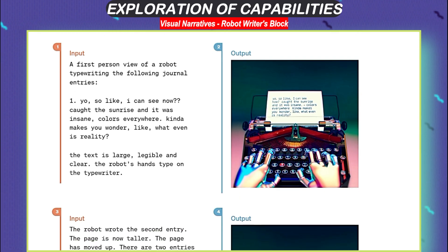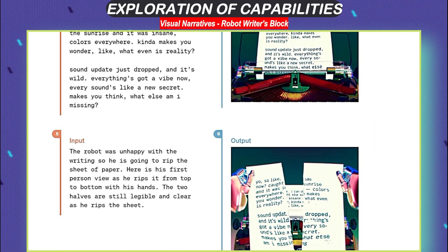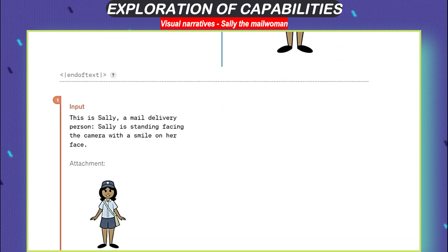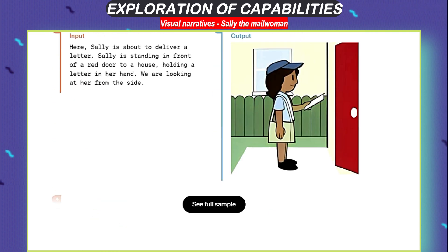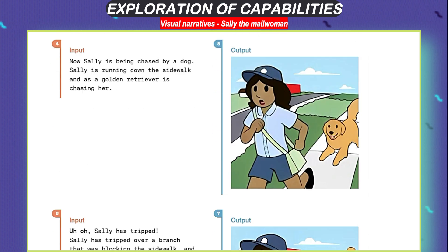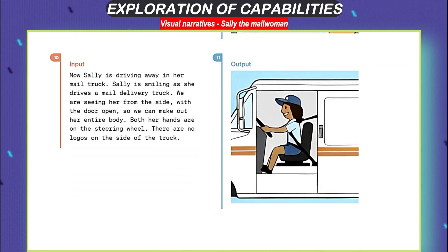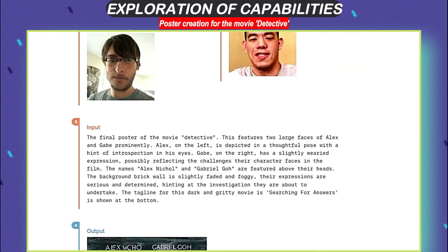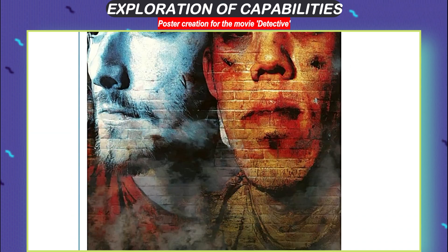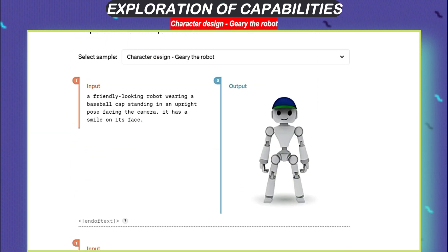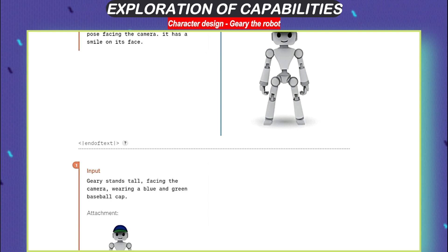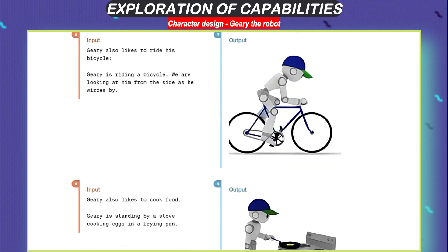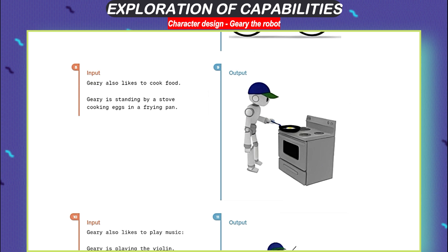First off, it's like a super duper tool for making all kinds of cool pictures and designs. If you want to make a cartoon character, you can describe it, and GPT-4O will draw it for you. It's awesome for making comic strips too. You can also make posters with it — just tell it what you want on the poster and it'll make it look cool. Then there's making characters: you describe what you want them to look like, and GPT-4O brings them to life on the screen. It's like having your own animation studio.